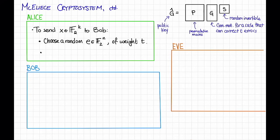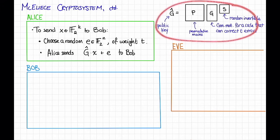Then Alice is going to send G hat times X plus E to Bob. Here G hat is Bob's public key, which I've drawn up here so you can remember what it is.